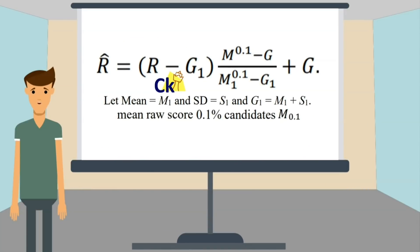So let's look at what the CAT formula is. This is the formula used by CAT, where M1 is the mean of Slot 1, S is the standard deviation, and G is the mean plus standard deviation. They count the top 0.1% of the candidates — so suppose 2 lakh people give the exam, then 0.1% of them is 200 people. They use those top 200 people's scores to calculate the scaled score.